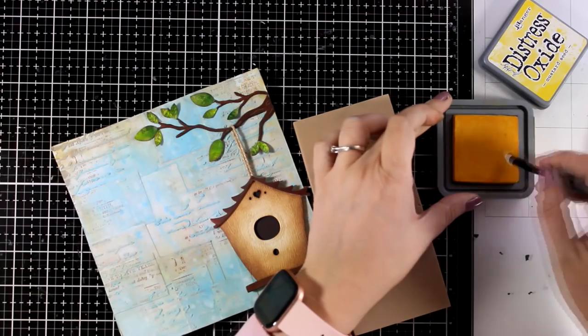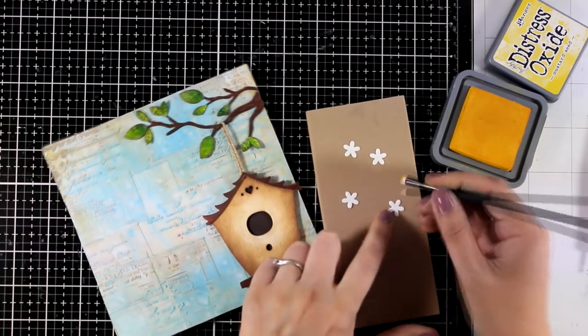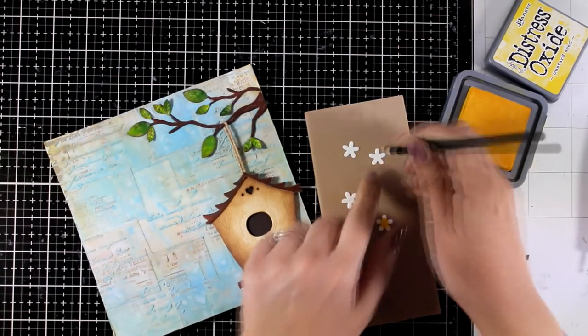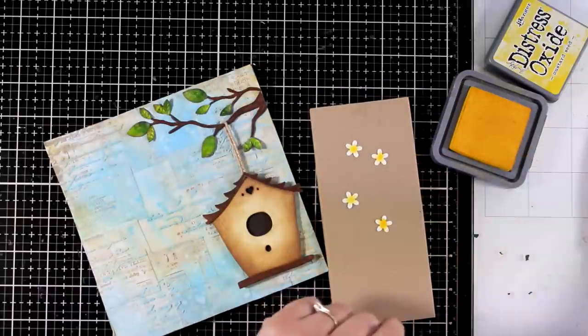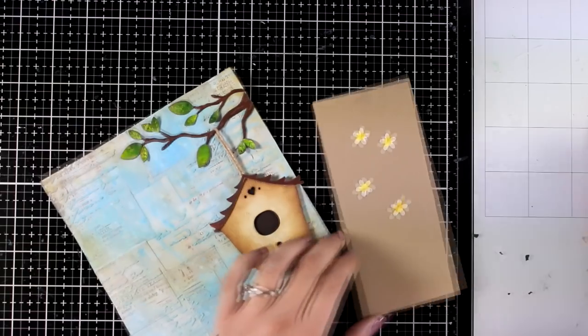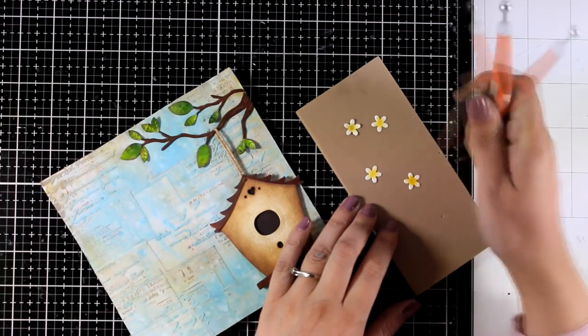And you cannot have a spring scene without some flowers, so I'm going to create a few here. I am adding just a touch of yellow at the center of the flowers and I'm going to give them some curve using the tool here.